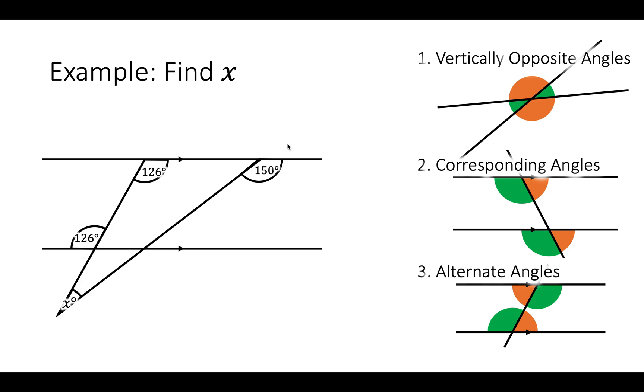Now, the 150 is on a straight line with this angle. So these two angles here will add up to 180. So that missing angle must be 30 degrees there.